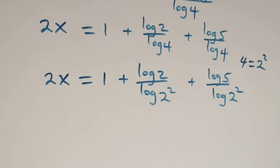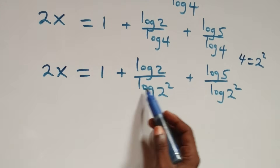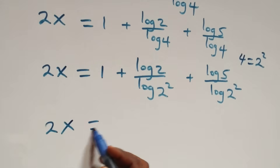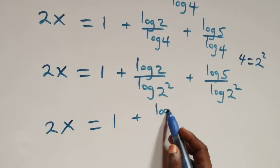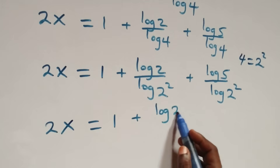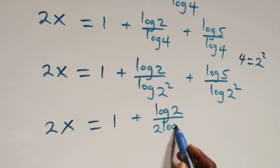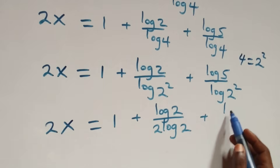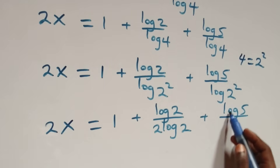We apply the power log rule: two comes down from the exponent. So this becomes two x equals to one plus log two over two log two, plus log five over two log two.